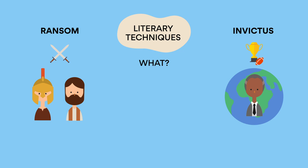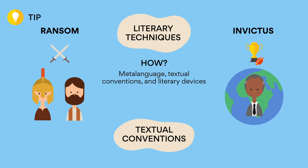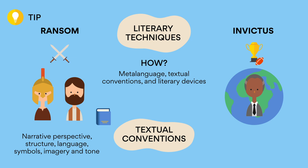When we focus on literary techniques, we're asking ourselves not what Malouf or Eastwood is saying, but how they are saying it. So instead of just quoting from the text, we can use meta language, textual conventions and literary devices to enhance our analysis. Familiarize yourself with the textual conventions you're studying. In the case of Ransom, it is a novel, so things like narrative perspective, structure, language, symbols, imagery and tone are things you should be looking out for.